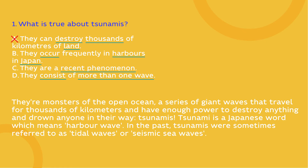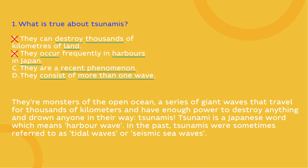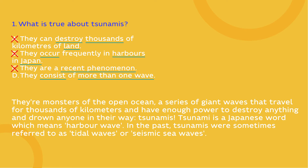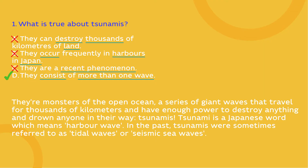Option B: harbour, Japan — can you find these words? Yes, in the fourth line. But they are about the meaning of the word 'tsunami,' not the frequency. Cross it out too. Option C: we underlined 'recent phenomenon.' Did tsunamis appear not long ago? No — they were just called differently: tidal waves or seismic sea waves. So another wrong option. The only option left is D: consists of more than one wave. What can we see in the first line? 'A series of giant waves.' A series is definitely more than one. Tick or circle option D — the first question is done!